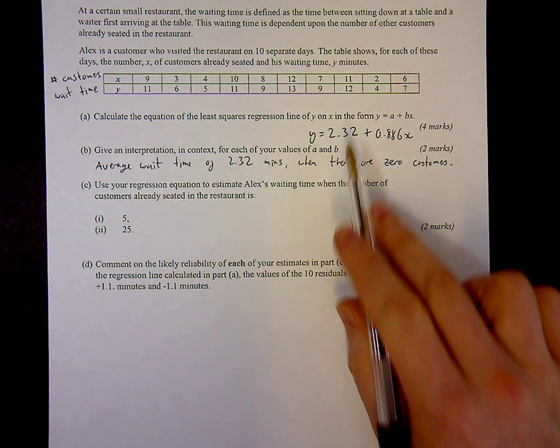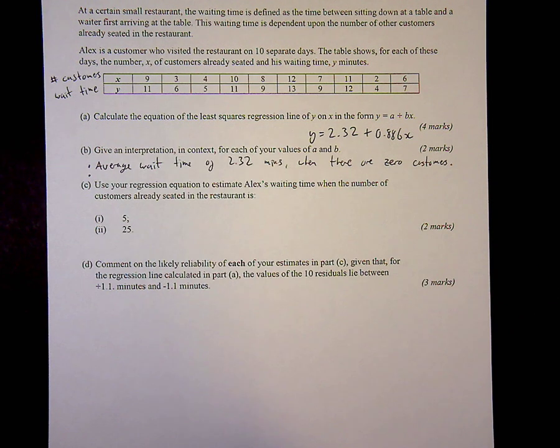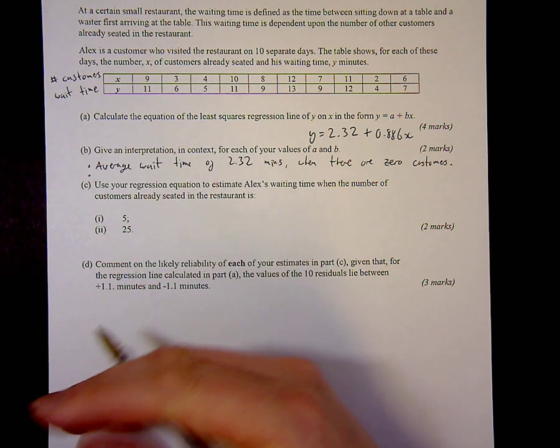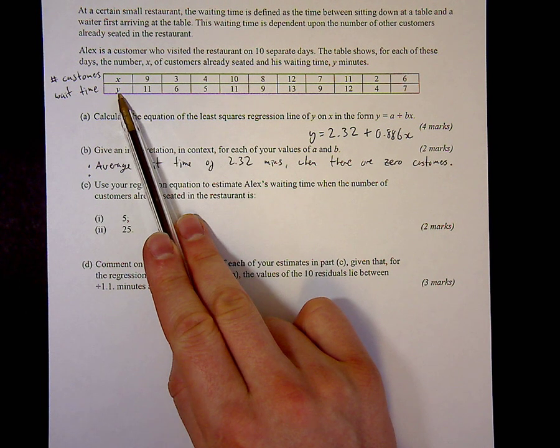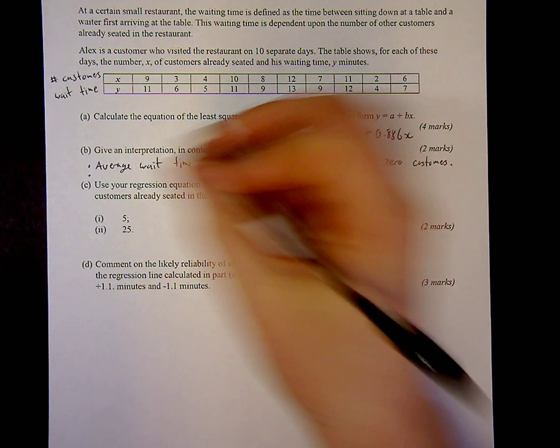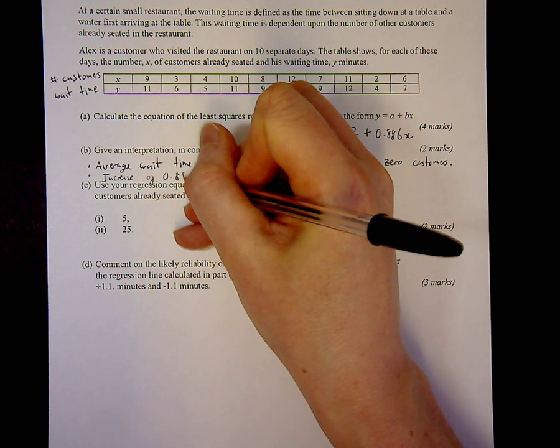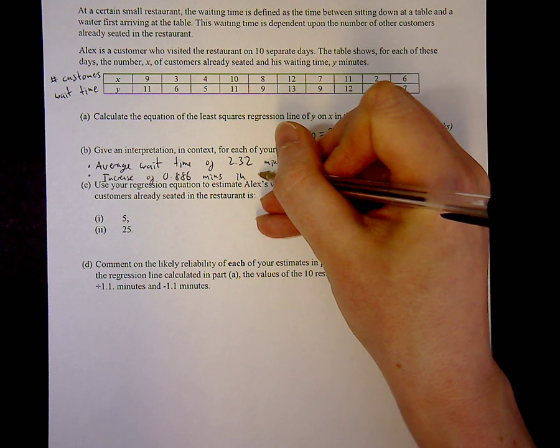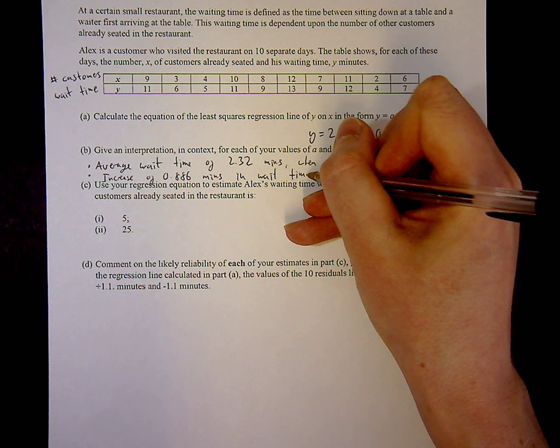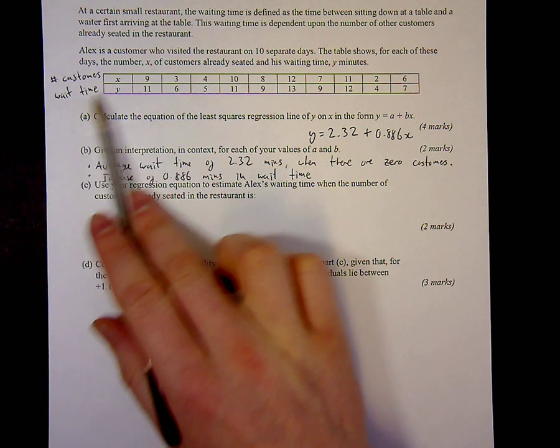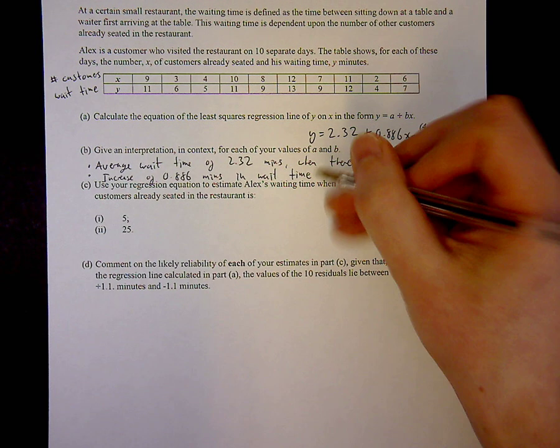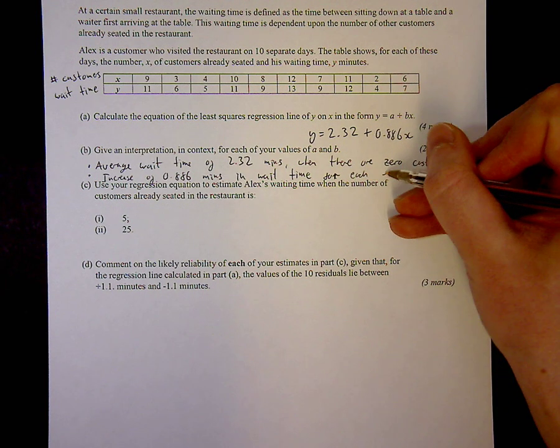The second one is about the gradient. If you think about the gradient in terms of a linear graph, it's the amount the graph goes up in y values for every 1 across the x values. So this 0.886 is the increase in the wait time, the y value, for every increase in x, the number of customers. So it's the increase of 0.886 minutes in the wait time. It's really important to put these in context rather than just say x and y, actually talk about what they mean in real life, as it says in context here. For each extra customer, that's what you need to get the two marks, two complete sentences.